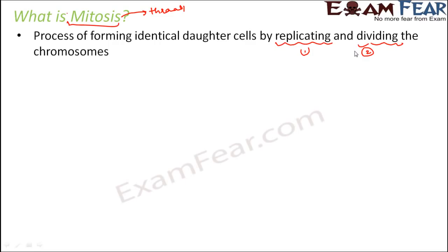One parent cell will form two daughter cells which are exactly identical to the parent cell. This is somewhat similar to binary fission, where the daughter cells were also exactly identical, but we will see how it is different.